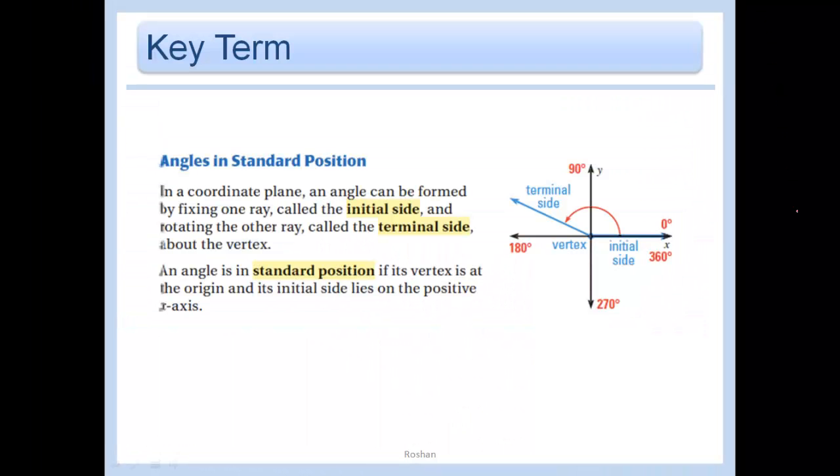Alright, so, some key terms. Angles in standard position. In a coordinate plane, an angle can be formed by fixing one ray called the initial side. So that's one ray on this side. And rotating the other ray that's this one, and that's called the terminal side. Well, obviously the initial side stays here, and the terminal side's the ending side. Terminal, the ending.